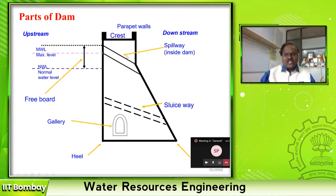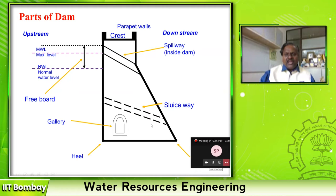There is a gallery — an opening from one bank to another bank — for two purposes. This is found only in solid gravity structures, not in earthen dams. The purposes are: first, for inspection to check whether any leakages are there; second, to collect the seepage water through the body of the dam and drain it away. There is also a sluice for release of stored water, and the surplus water exits through the spillway.